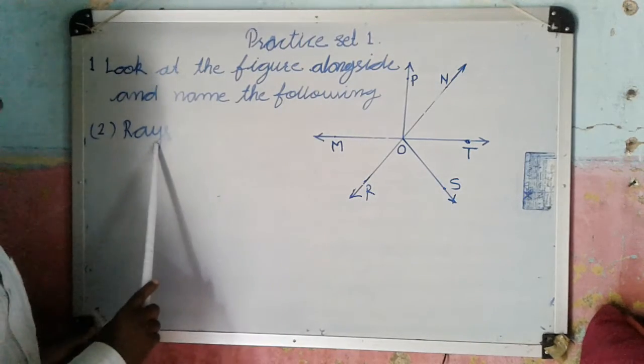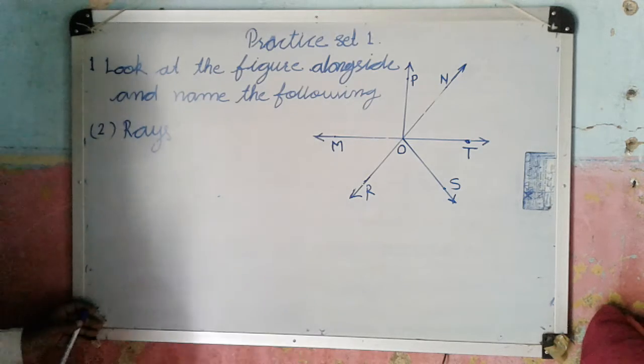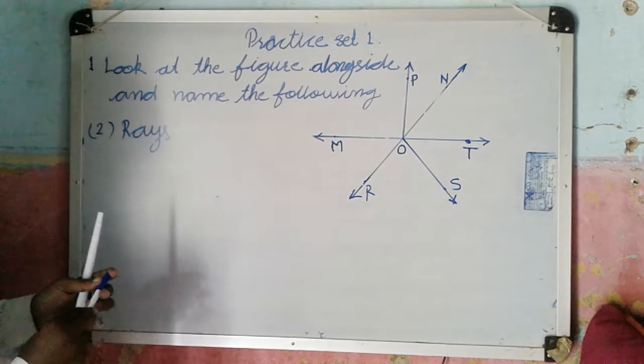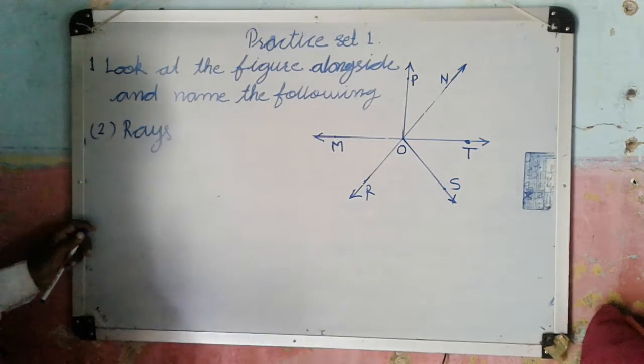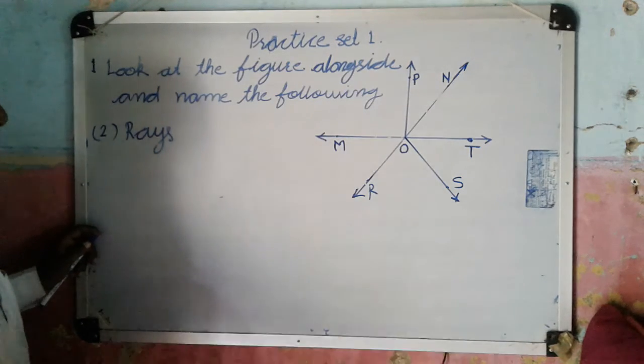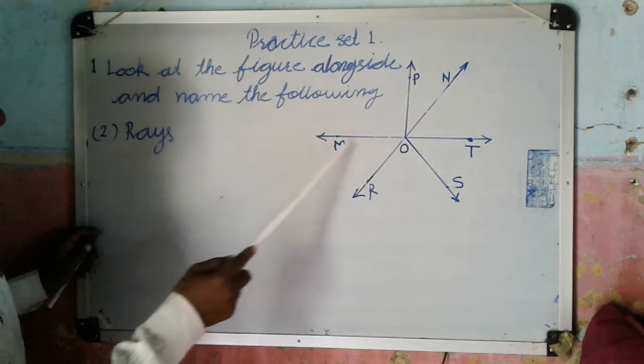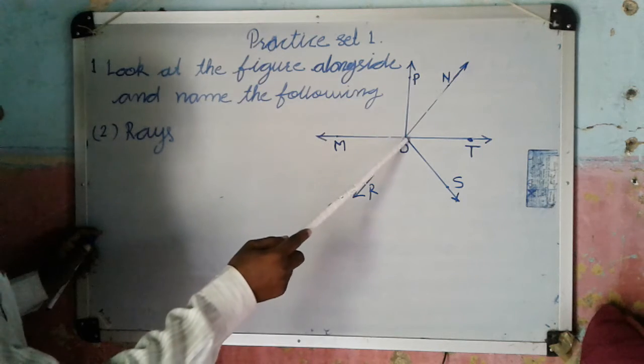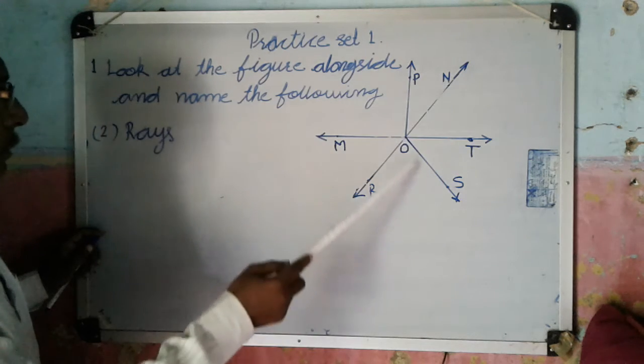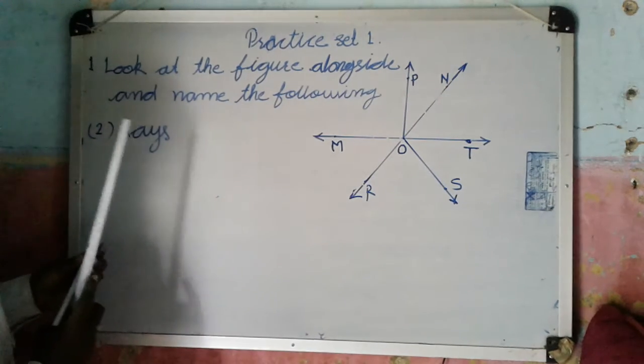The second is rays. Now we have to write the name of rays in this figure. So here see, if you start point O, from O, so there are many rays. We can have here ray OM, ray OT, ray OR, ray OM, ray OS, and ray OP. These are all rays.